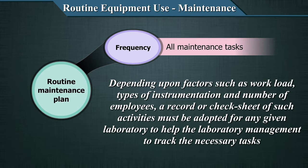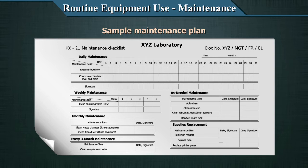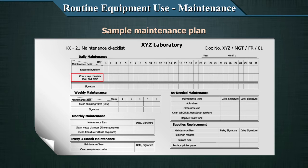We will show you a few formats or maintenance logs for different equipment. Such formats have to be developed for all equipment used in the laboratory. This format is for the daily maintenance of a particular equipment, depicting about 30 to 31 days. Each activity must be done on a daily basis — such as execute shutdown, check the trap chamber, and so on. After the technician completes the task, it has to be checked off with a check mark and signed as evidence of daily maintenance.